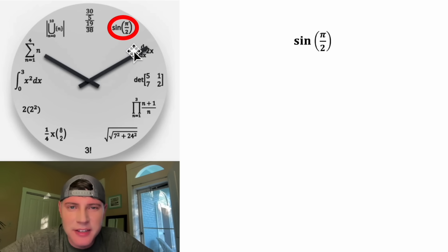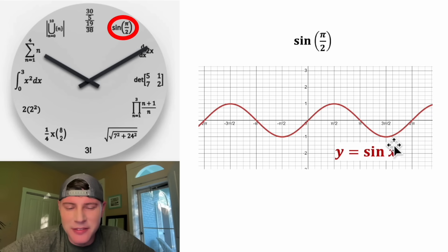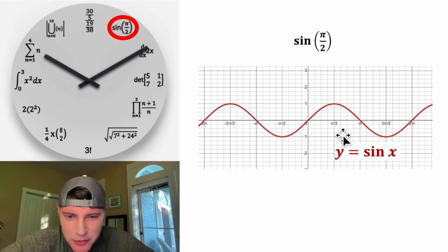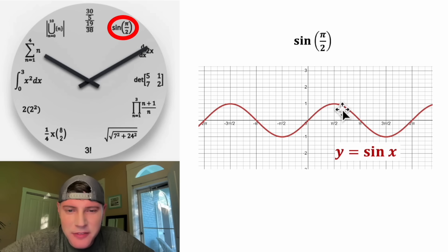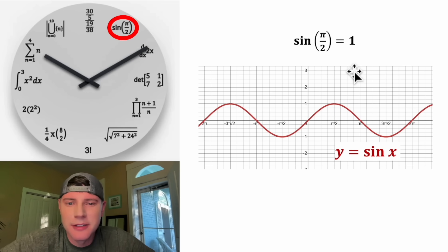First, we have sine of pi over 2. One thing you could do is graph y equals sine of x, and then find pi over 2, and see that the height of this is 1. So sine of pi over 2 is equal to 1.